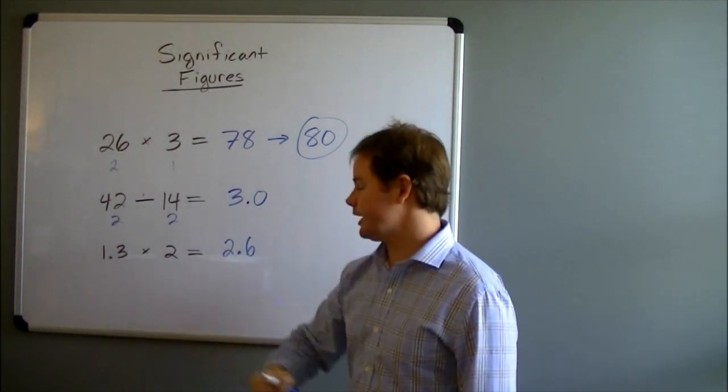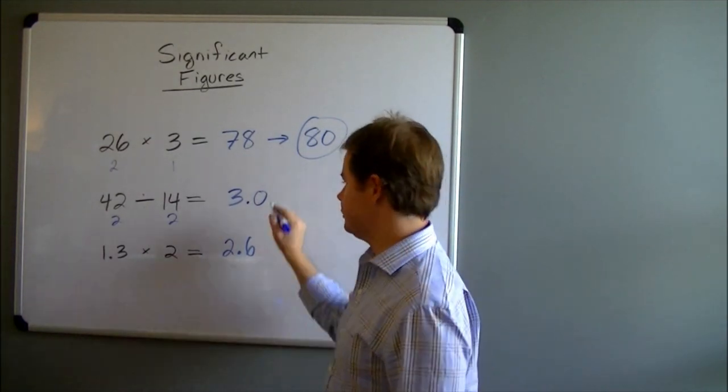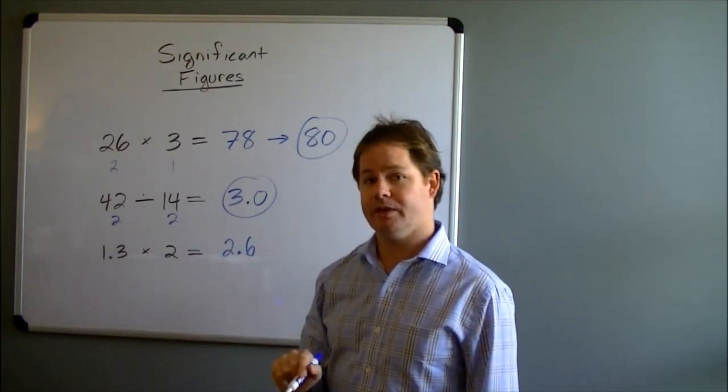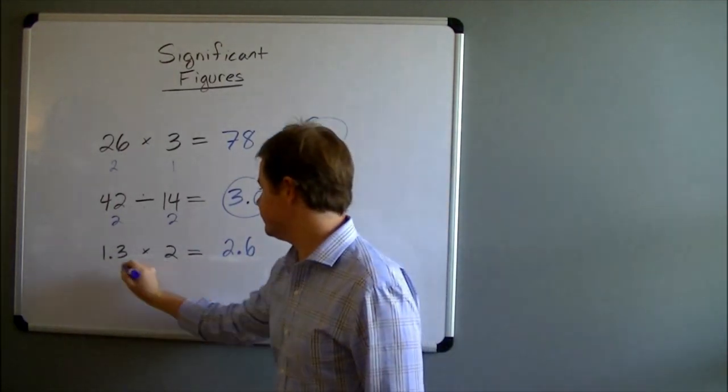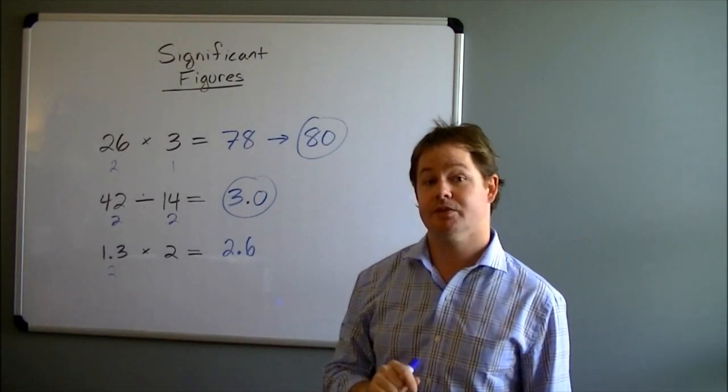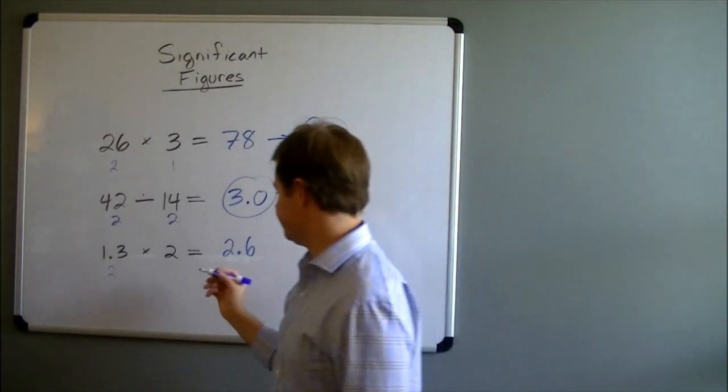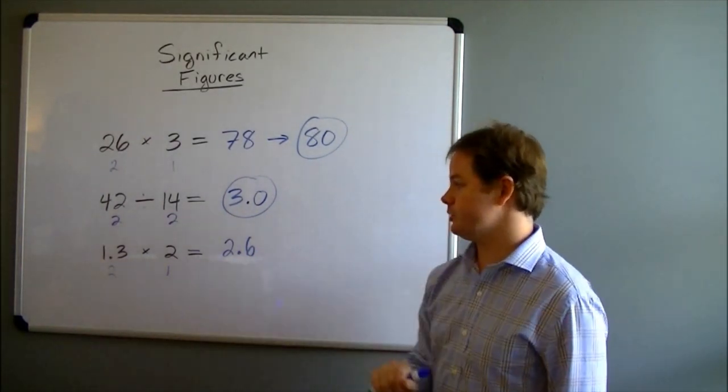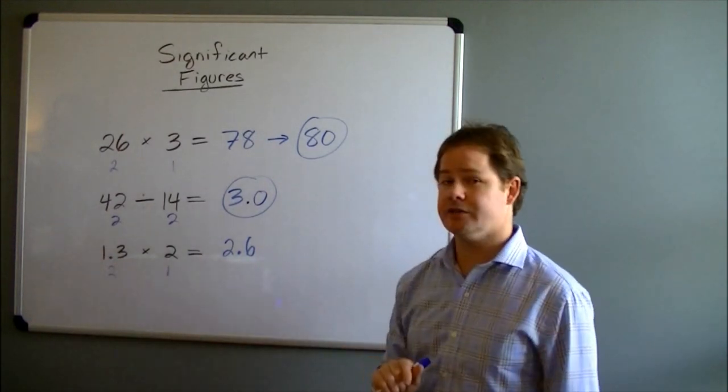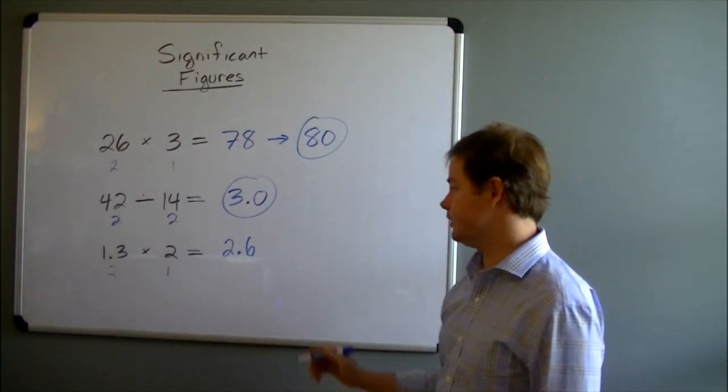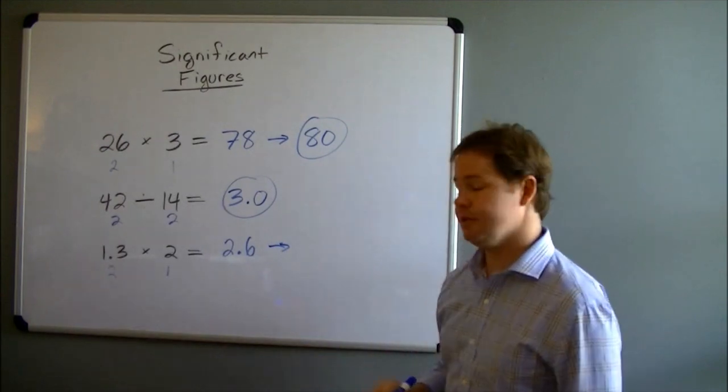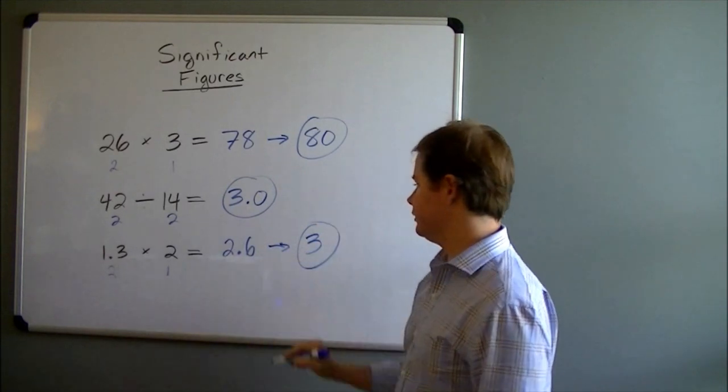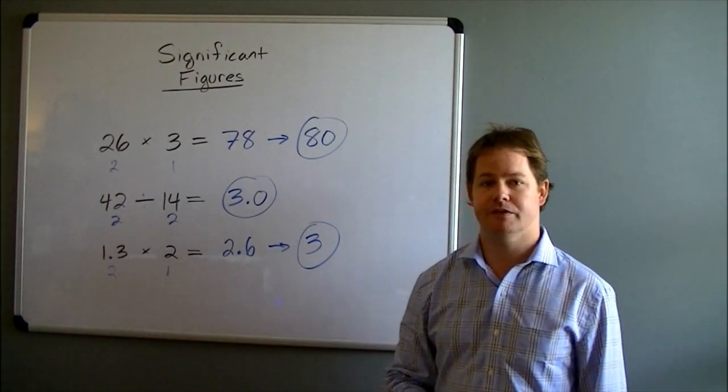Let's take a look at our last example. 1.3 times 2 gives us 2.6. How many sig figs in 1.3? If you said 2, you're correct. How many sig figs in the number 2? If you said 1, you're correct. So the fewest number of sig figs here is 1 sig fig for the number 2. So that means our final answer has to have only one significant figure. So 2.6 needs to be rounded. And in this case, we need to round that to the closest whole number, which is 3. So we would have only one sig fig in that final answer.